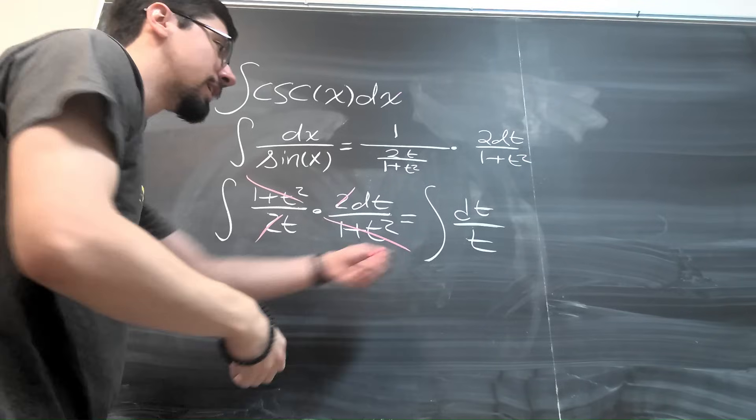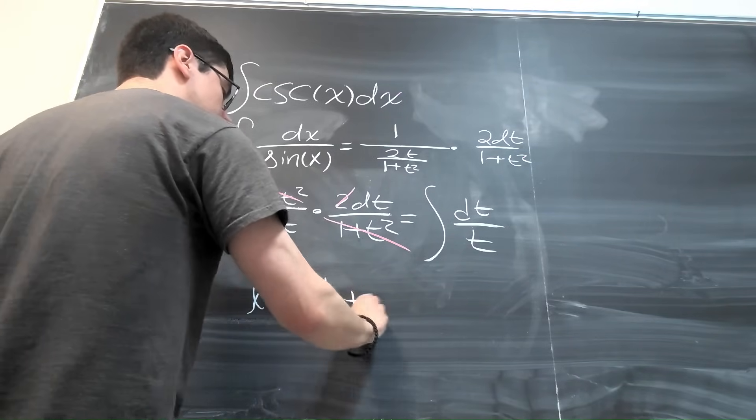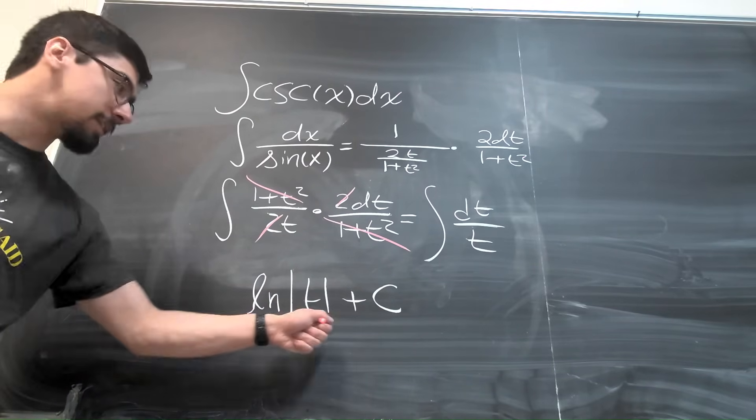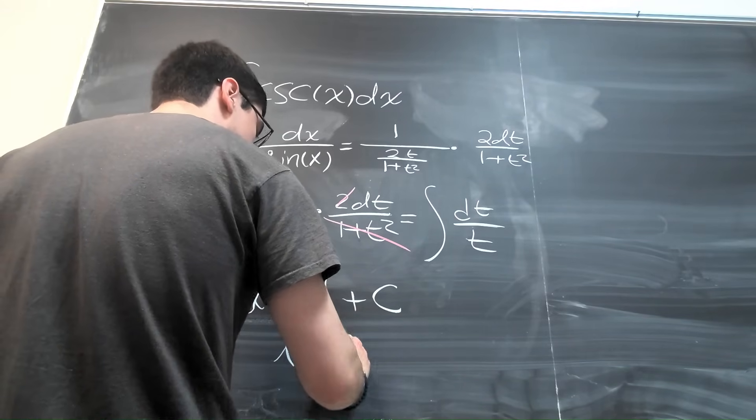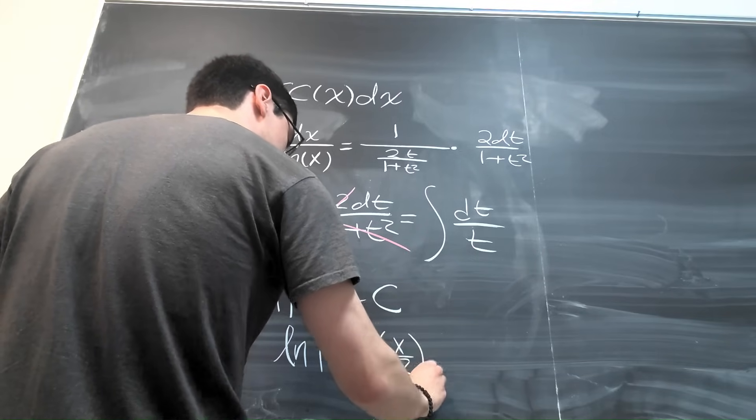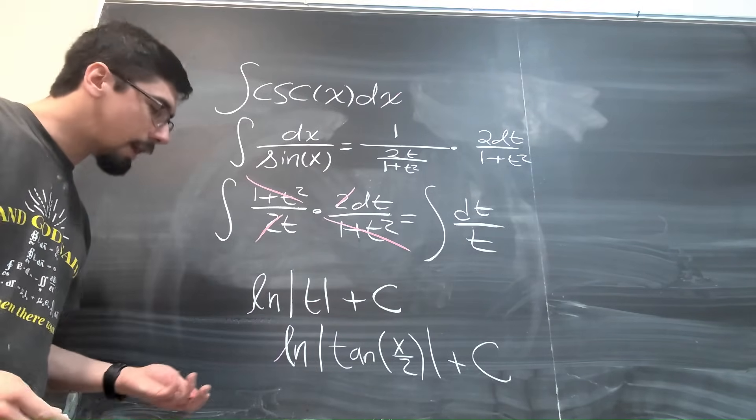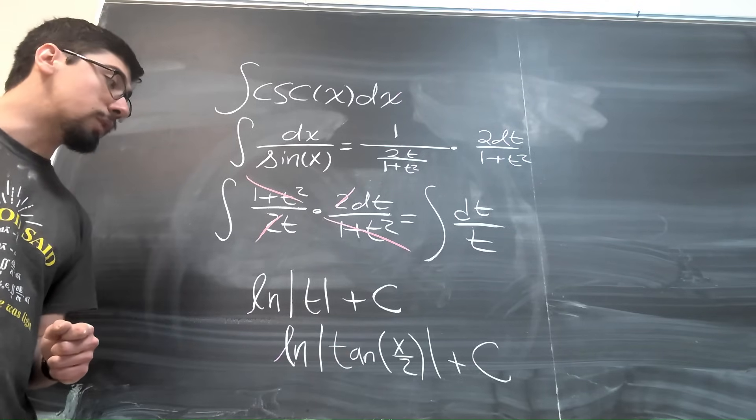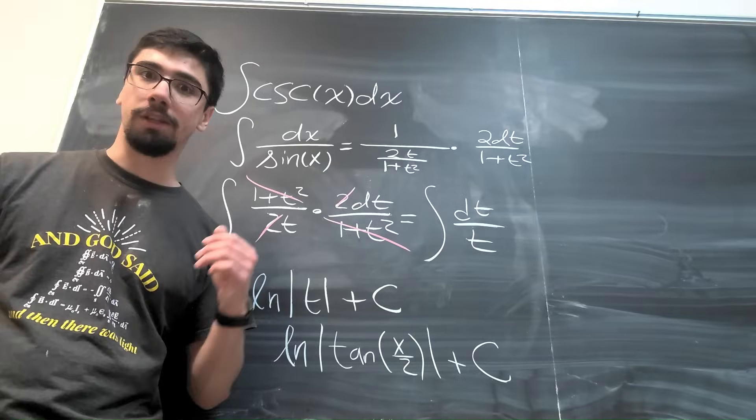And this is much easier to work with. This thing is just the natural log of the absolute value of t plus some constant. And then we just go ahead and remember that t is tangent of x over 2. So this becomes the natural log of tangent of x over 2 plus our constant of integration. Now, you will see this looks different than the answer you would get if you did it the standard way, but you can just do some trig identities to go and see that these really are the same thing.